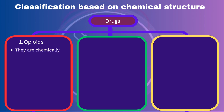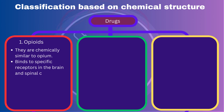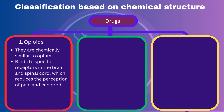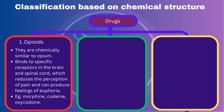Opioids: Opioids are chemically similar to opium, which is derived from the poppy plant. Opioids work by binding to specific receptors in the brain and spinal cord, which reduces the perception of pain and can produce feelings of euphoria. Examples of opioids are morphine, codeine, and oxycodone.